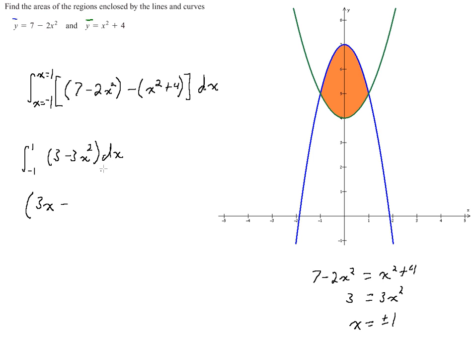And then again, we're evaluating from negative 1 to 1. So we'll plug in 3 times 1 minus 1 cubed, and then minus 3 times negative 1 minus negative 1 cubed.